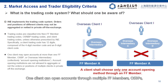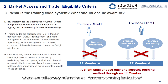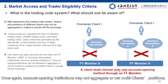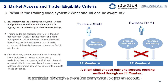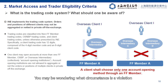One client can open accounts through multiple FF members, OSBPs, or overseas intermediaries, collectively referred to as account opening institutions. Account opening institutions may not aggregate or net multi-client positions. Although a client has many ways to open an account, it may choose only one for each FF member that ultimately carries its account. You may be wondering what circumstance constitutes a violation of this one-account opening method rule.